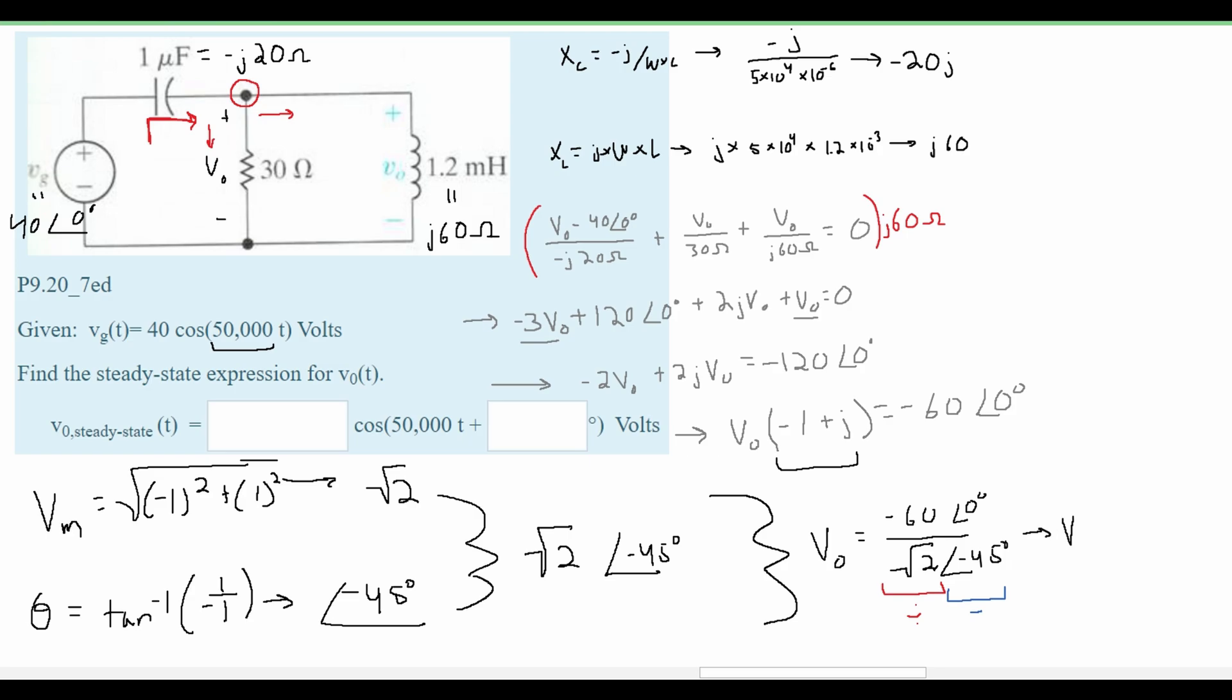When we do this we are going to get that our V₀ is equal to approximately 42.4 and then we have the angle of 0 degrees minus a negative 45 degrees or 45 degrees. That'll be the answer to our problem. So when we plug this in for the actual question we are going to put a 42.4 here and then our 45 right here. And that's how you would go about solving this problem.